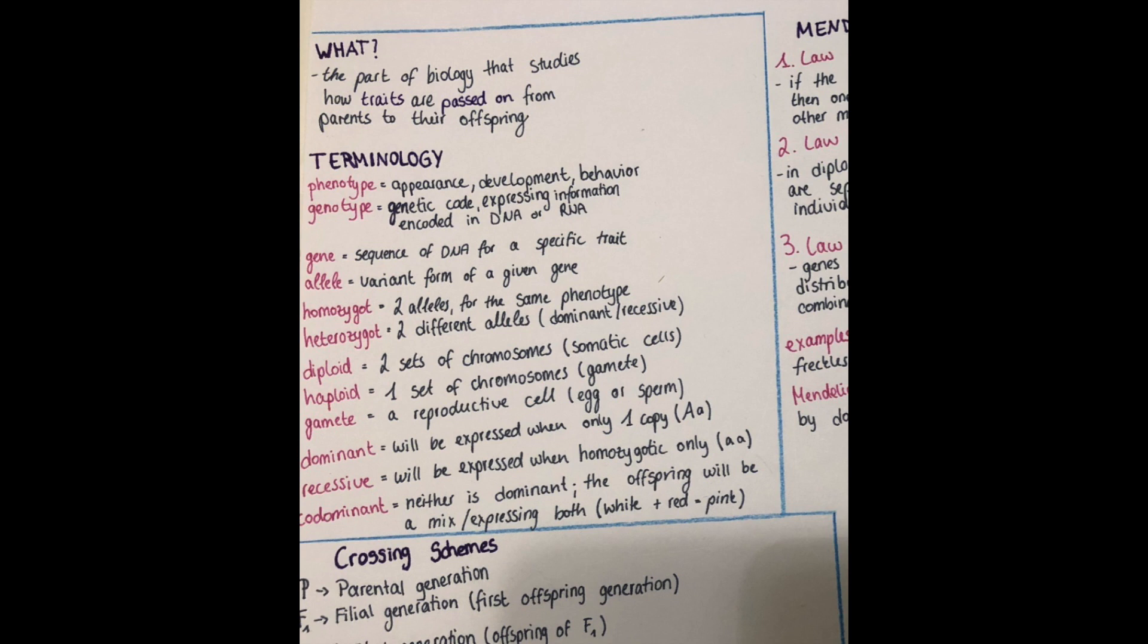And a genotype is the code that's standing behind that phenotype. We can't necessarily always see it because there can be a trait hidden in a genotype which is not expressed in the phenotype. But we will come to that later. But for now a genotype is a genetic code expressing information which is encoded in the DNA or the RNA.